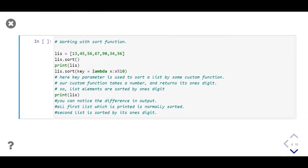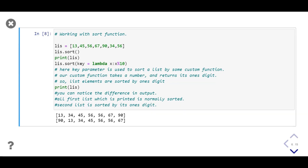In this example we'll perform list sorting. First we store a list of numbers in variable `lis`, sort it, and print it. Then we perform sorting considering only the ones digit. We use the `key` parameter in the `sort` method, defining a custom function using `lambda` that takes a single number and selects its ones digit. We call `sort` on the same list passing this lambda as the key, then print the list again. In the first line the list is normally sorted; in the second line it is sorted by ones digits.